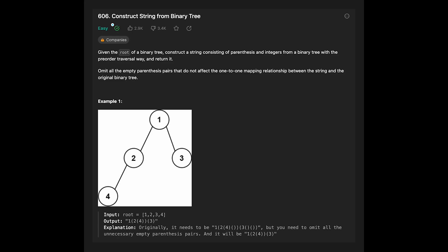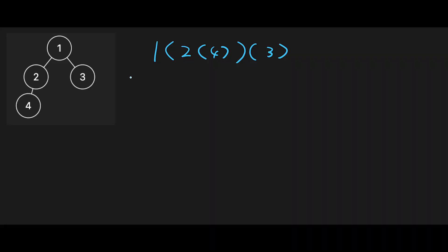Hey everyone, today we are going to solve the LeetCode question 'Construct String from Binary Tree'. The description says pre-order traversal, so we should traverse the tree in pre-order way, and we need to create an output string with node values and parentheses. Let's analyze this.